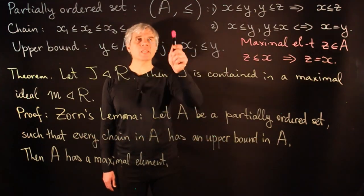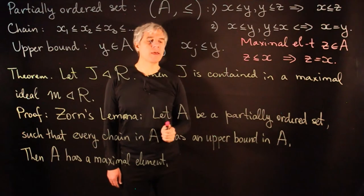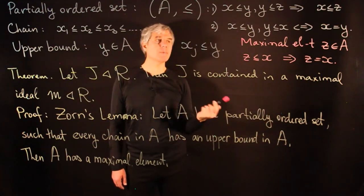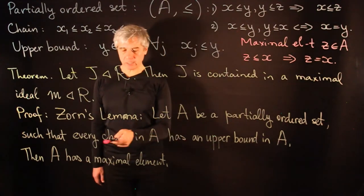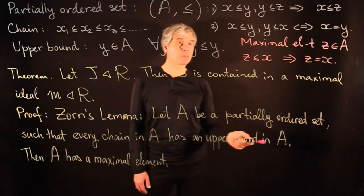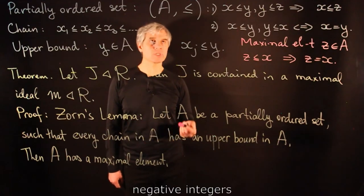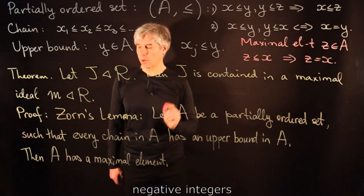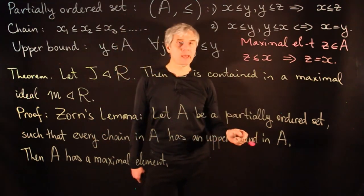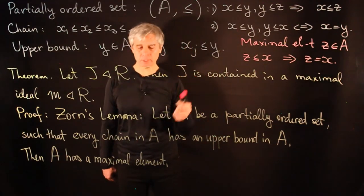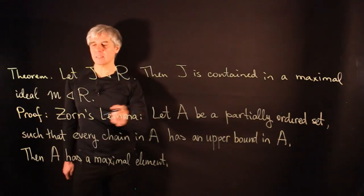For example, if we take A to be the set of natural numbers with the natural relation ≤, this set will not have a maximal element, and this ordering will not satisfy the condition that every chain has an upper bound. On the other hand, if we take A to be the set of negative integers with the same relation ≤, then every chain will have an upper bound, and this set contains a maximal element — namely, minus 1.